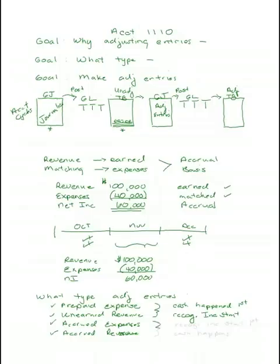These two adjusting entries have something in common, and that is recognition on the income statement happens first. It happens in November, but cash happens later, so we record it before the cash happens. So those are the two types of adjusting entries.